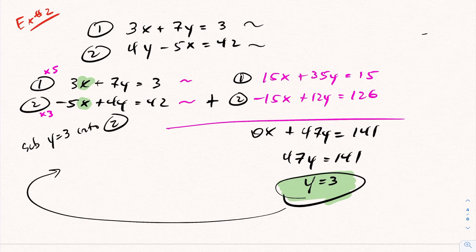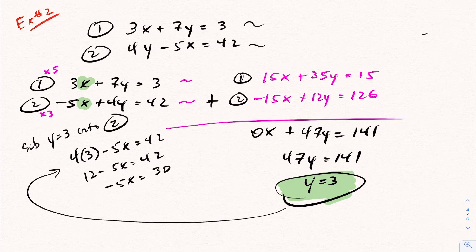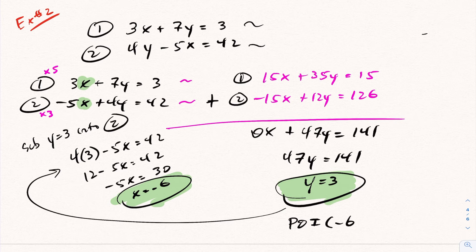I'm going to sub y is 3 into either equation 1 or 2. Let's just do 2 this time. So it's going to be 4 times y, which is 3, minus 5x is 42. This is 12 minus 5x is 42. Going ahead and solving this, you end up getting x is negative 6. So putting this together here, therefore the point of intersection, always by alphabetical order, is negative 6 and 3.